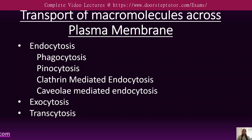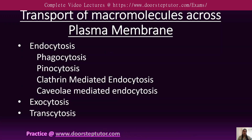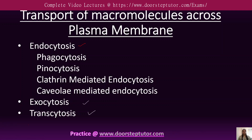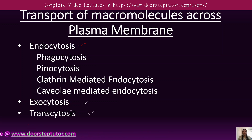Today we will discuss the transport of macromolecules across the plasma membrane — how larger particles get transported in and out of the cell. There are three different types of transport mechanisms: endocytosis, exocytosis, and transcytosis. Phagocytosis, pinocytosis, clathrin-mediated endocytosis, and caveolae-mediated endocytosis are different forms of the endocytosis pathway.